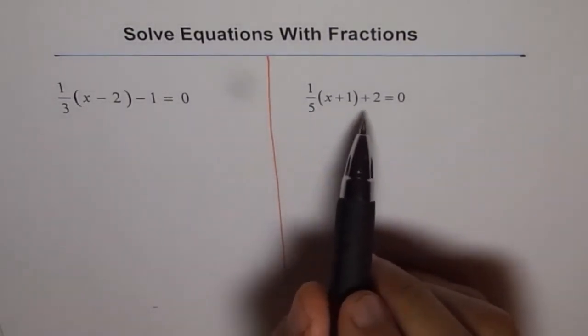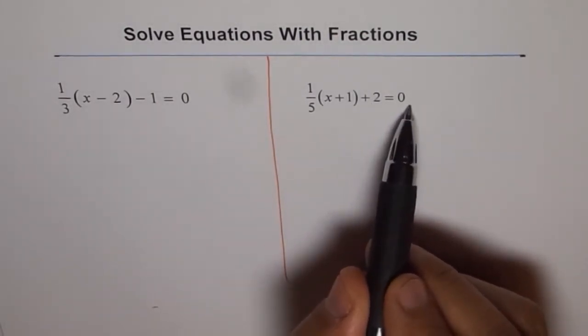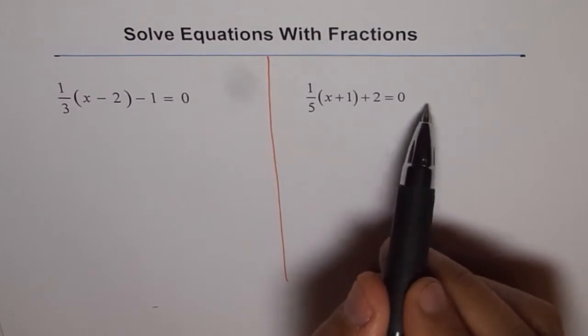So here if you see the equation, what we can do is first we will take out 2, that means take away 2 from both sides. So we will get this term equals to minus 2. Then we will multiply by 5.